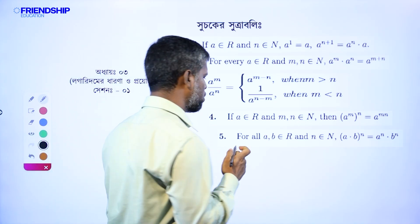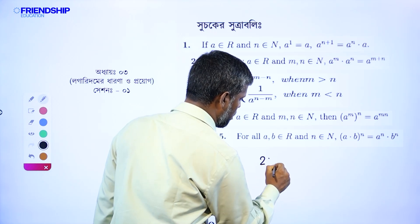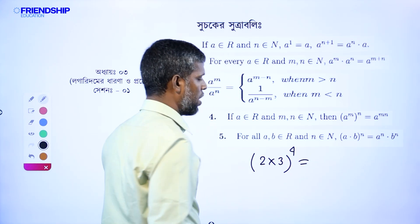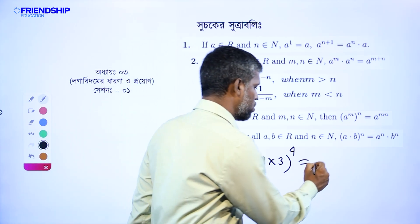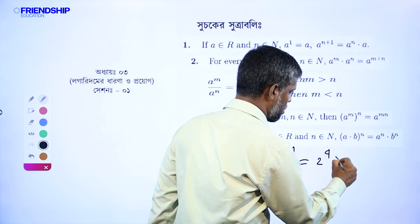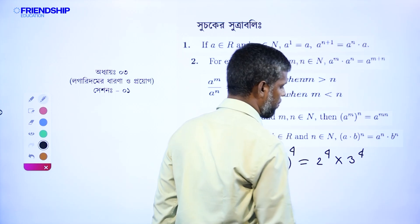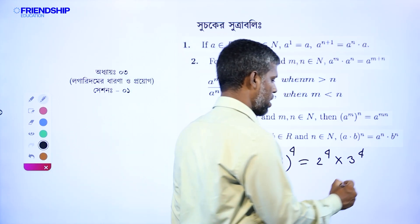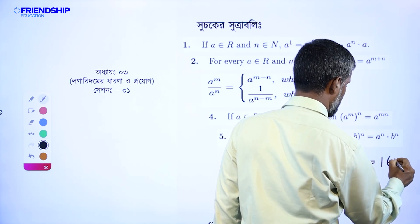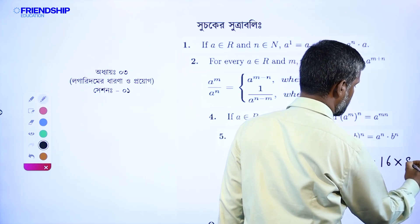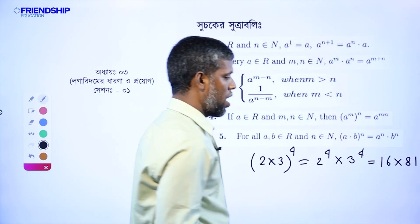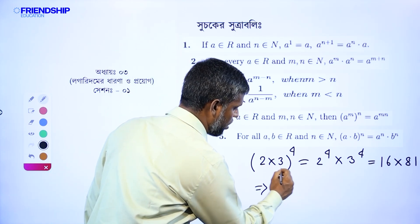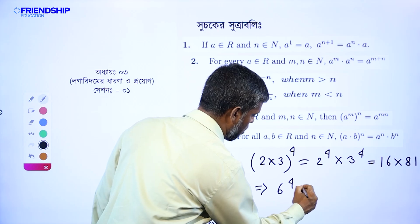We have the same thing as a equal to 2, that means 2 into 3 whole to the power 4. This means 2 to the power 4 into 3 to the power 4. 2 to the power 4 means 16 and 3 to the power 4 means 81. We will do this calculation. 2 to the power 8 is equal to 6 to the power 4.